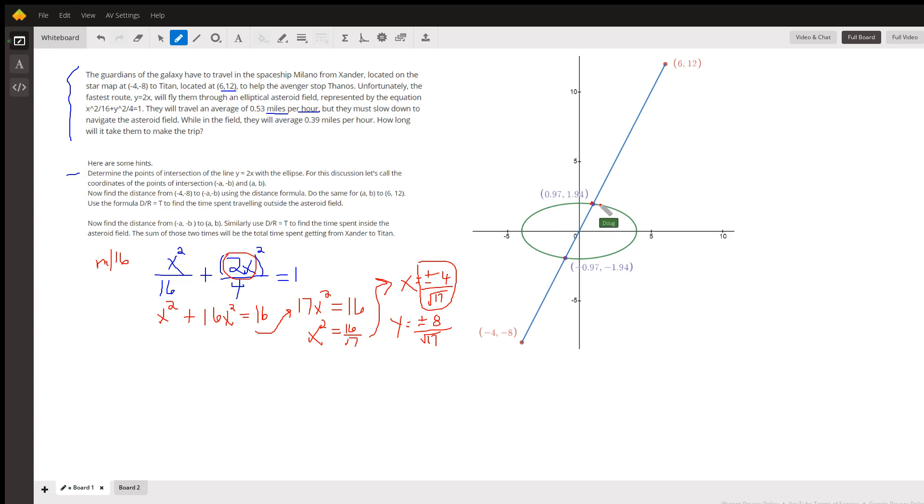So the coordinates of this point are (4/√17, 8/√17), and these are just the opposite of those: (-4/√17, -8/√17). You could rationalize these if you wanted to, which I think I showed on the Desmos graph as 4√17/17. But now, the next thing it says is find the distance from (-4, -8) to this point right here.